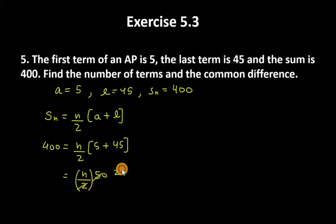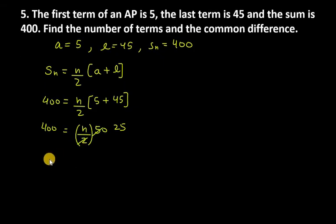Dividing by 2, we get 25. So 400 equals 25n.